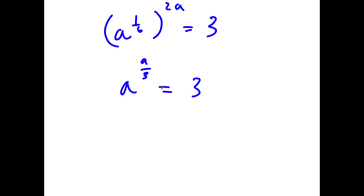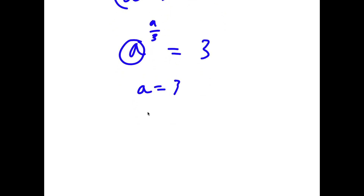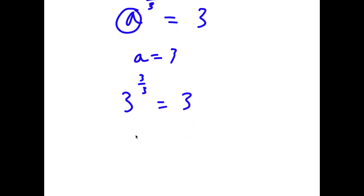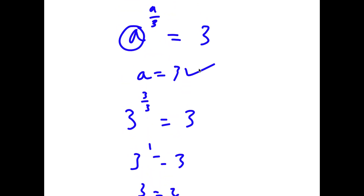Now let's say a is 3. This means that a over 3 equals 1. So does 3 to the power of 3 over 3 equal 3? Well, 3 over 3 is 1, so I have 3 to the power of 1 is equal to 3, and 3 to the power of 1 is indeed 3. So I have 3 equals 3, meaning a does equal 3.